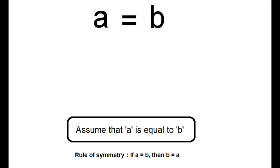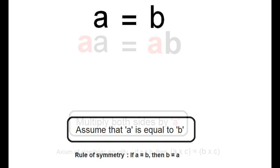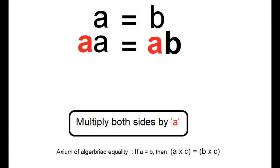Let's assume that A is equal to B. The mathematical rule of symmetry allows us to do this. Using the axiom of algebraic equality, we're going to multiply both sides by A.